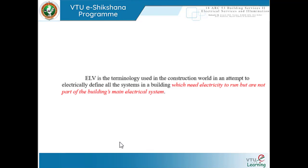ELV is the extra low voltage system. It is a terminology used in the construction world in an attempt to electrically define all the systems in a building which need electricity to run but are not part of the building's main electrical system. They require electricity, but at the same time they are not part of the building's main electrical system — we will find an answer to how this is possible in the upcoming slides.